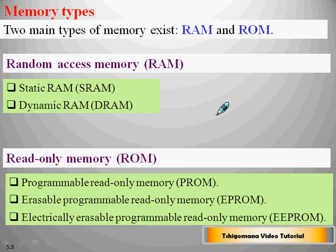Read-only memory, also called ROM, is divided into three types: programmable read-only memory (PROM), erasable programmable read-only memory (EPROM), and EEPROM. PROM can be programmed by electronics experts. EPROM can be erased — whatever is stored in it can be removed. EEPROM can be erased electrically.